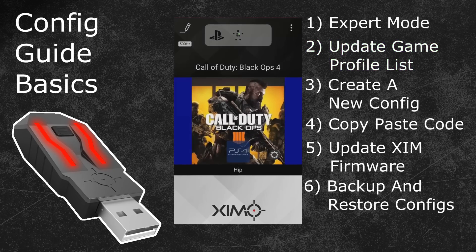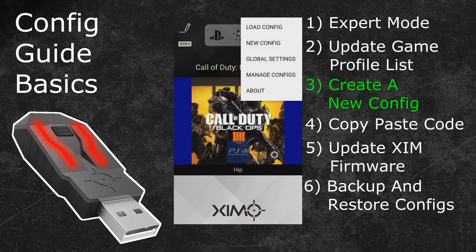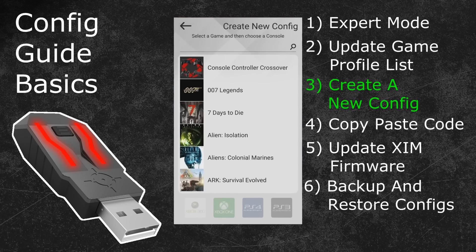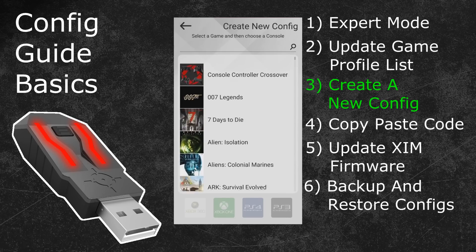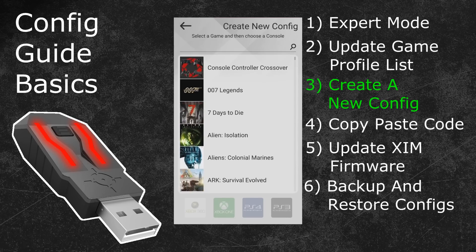In the third topic of this tutorial I will show you how you can create a new game configuration and how you can find the required in-game settings for your Zim. Start by clicking on the options in the top right, then press the new configuration button to open the Zim game configuration library. Here you can search for your preferred game — either scroll through the list or use the search bar at the top. I will use the search bar to filter out all Battlefield games.